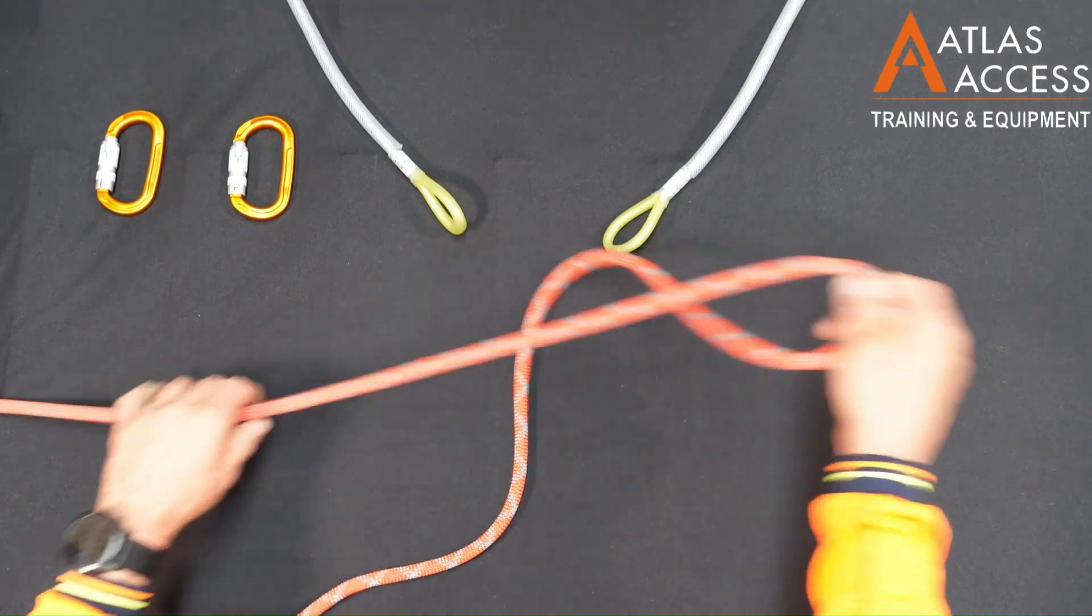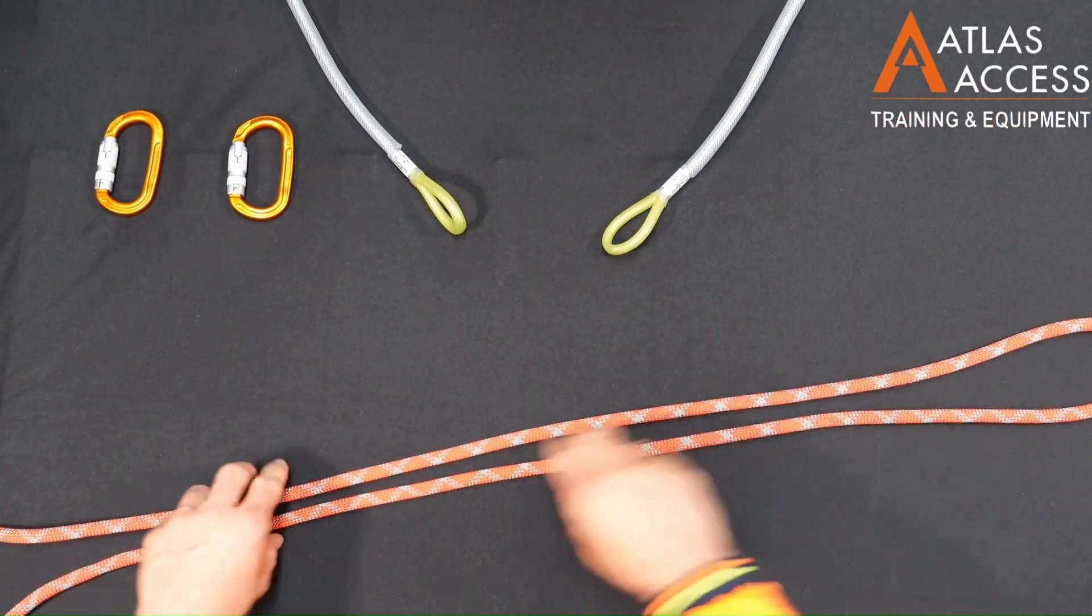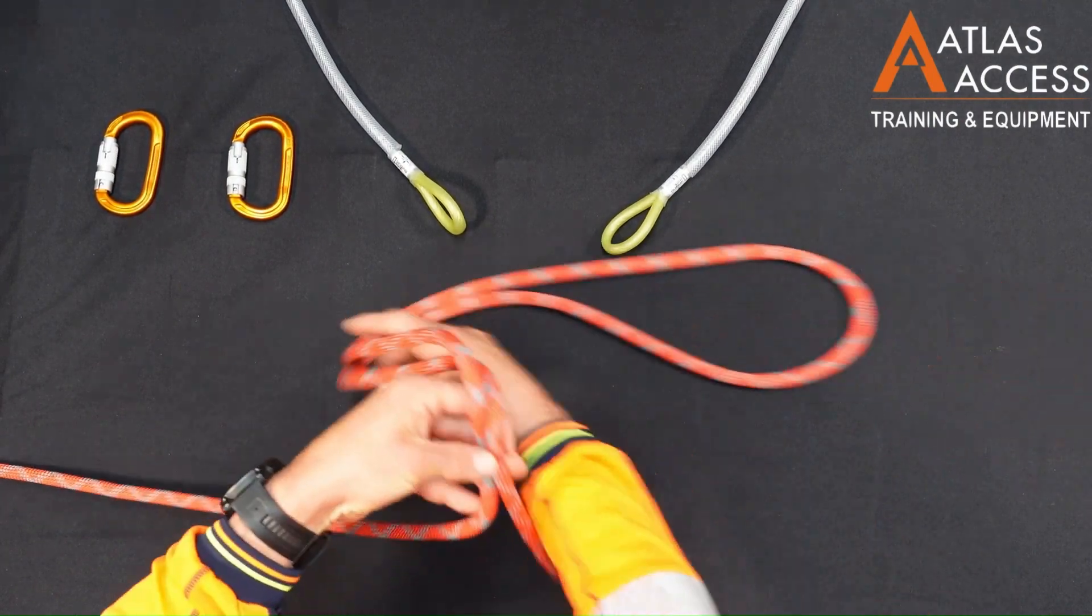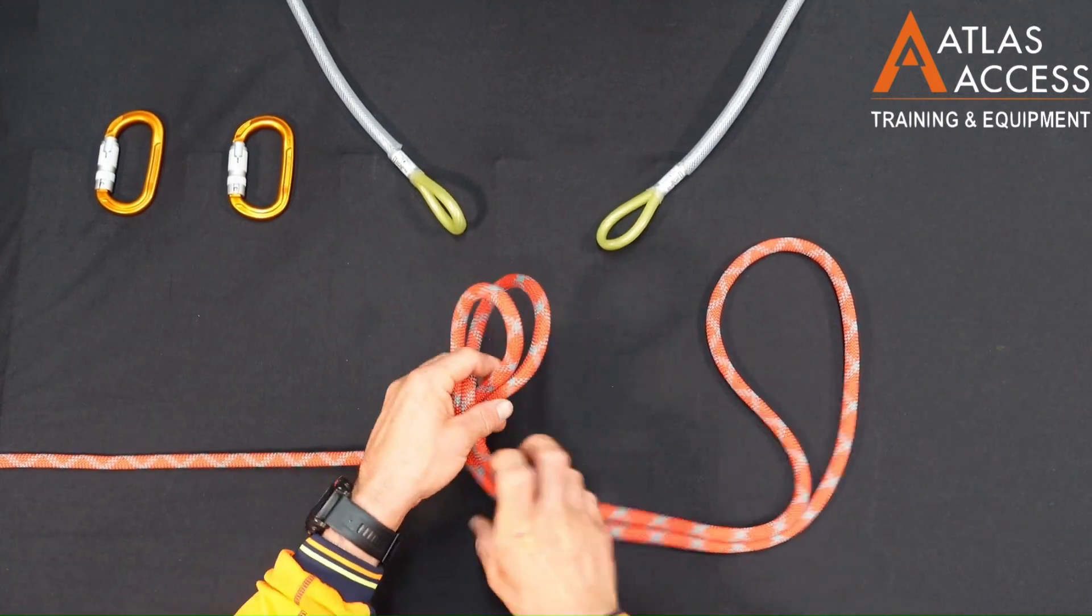Another method is to use a double figure eight, also known as bunny ears. To do this, grab a large loop and start as if you were going to create a figure eight on the bite, wrapping the rope around one and a half times.